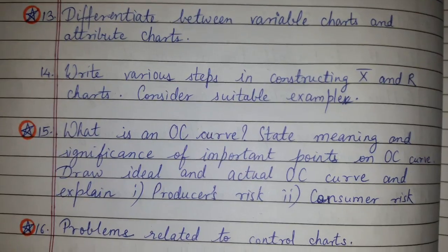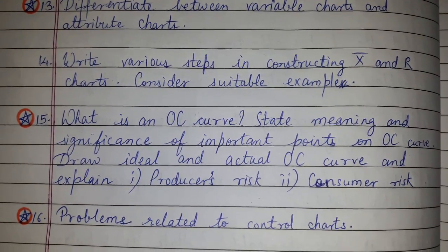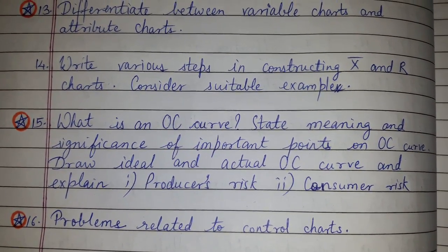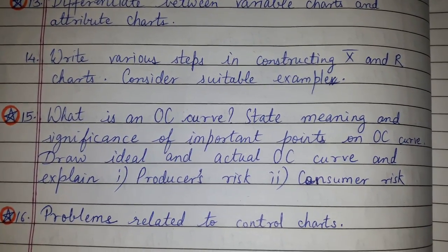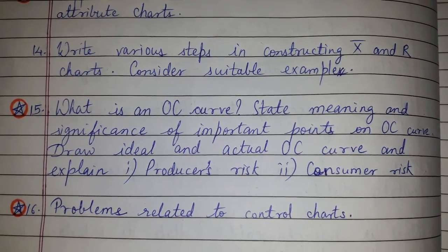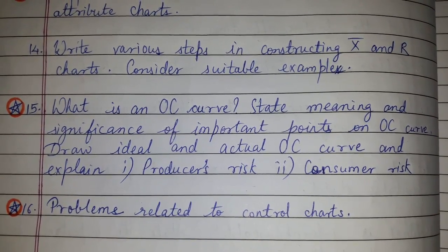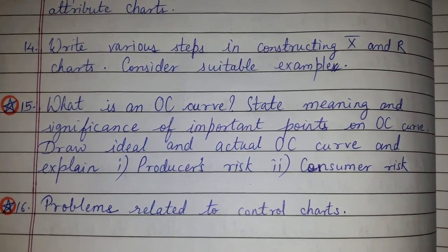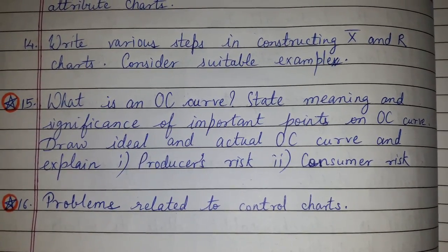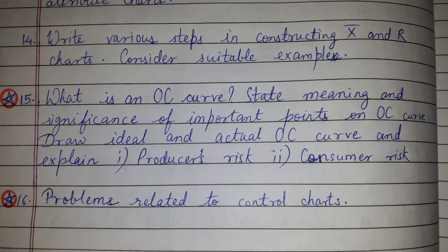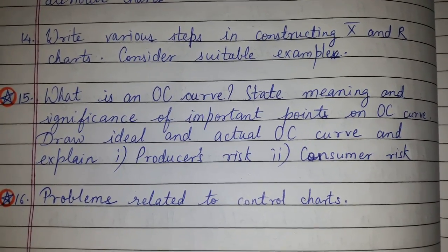Question number 15: what is OC curve, state meaning and significance of important points on OC curve? Draw ideal and actual OC curve and explain producer's risk and consumer risk. And question number 16: problems related to control charts.